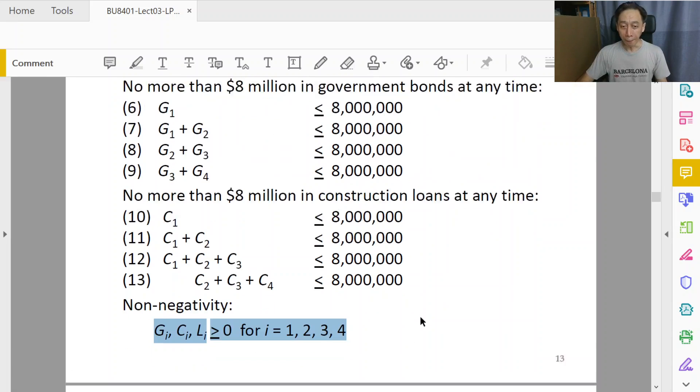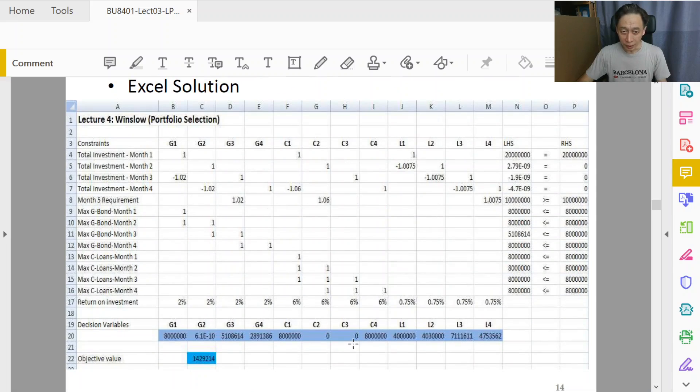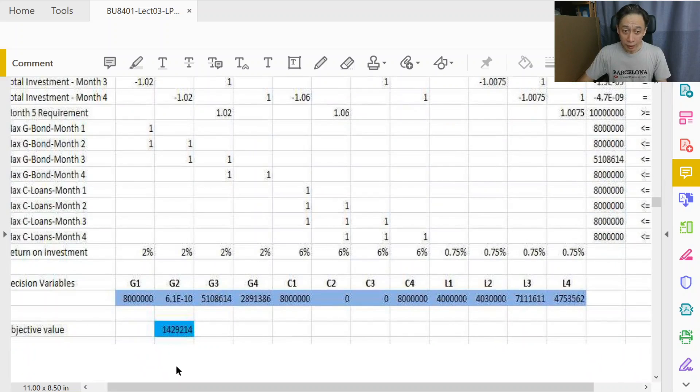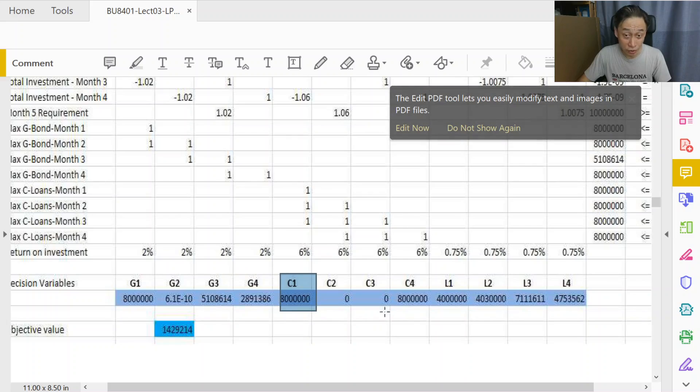Finally, non-negativity for all the decision variables, which is easy. So if we implement that in Excel, at the click of the solver button, it tells us to invest maximum amount for government bond because it's stable and we can invest up to 8 million. This 10 to the negative 10 is basically saying zero, so Excel's way of being unable to round down to zero. So zero nothing in government bond because total exposure is 8 million. And then because of the interests coming in, the numbers start to veer off the million figure, and we can understand that. And a lot of money invested in the construction loan, C4 also, because it's giving us six percent.